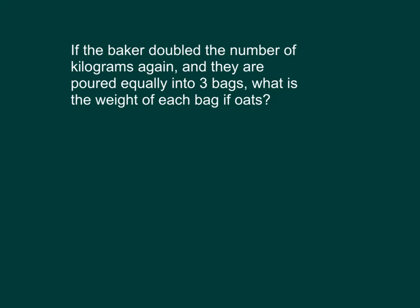If the baker doubled the number of kilograms again, and they are poured equally into 3 bags, what is the weight of each bag of oats? So now we're talking about 16. Let's work this one out numerically. 16 divided by 3 equals 16 thirds.